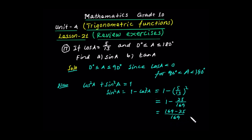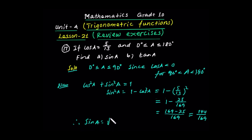This equals 144 over 169. Since a is in the first quadrant, we take the positive value. So sin squared a equals 144 over 169, and therefore sin a equals the positive square root of 144 over 169, which equals 12 over 13.